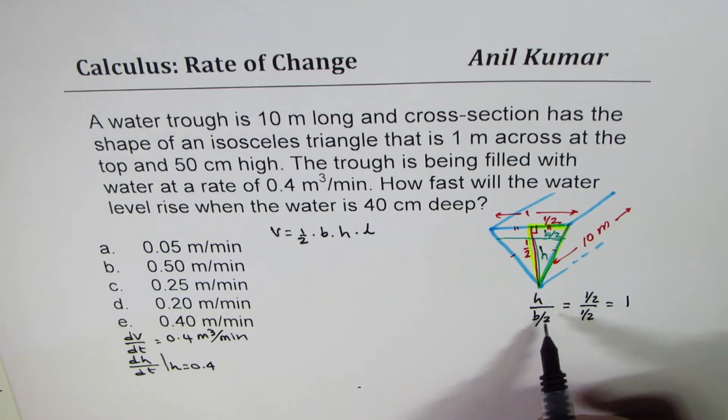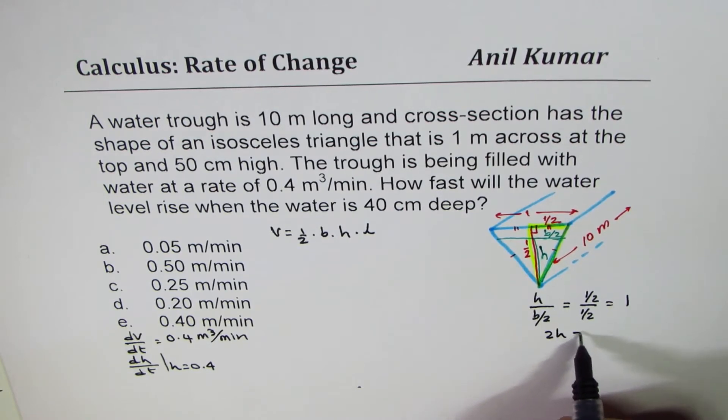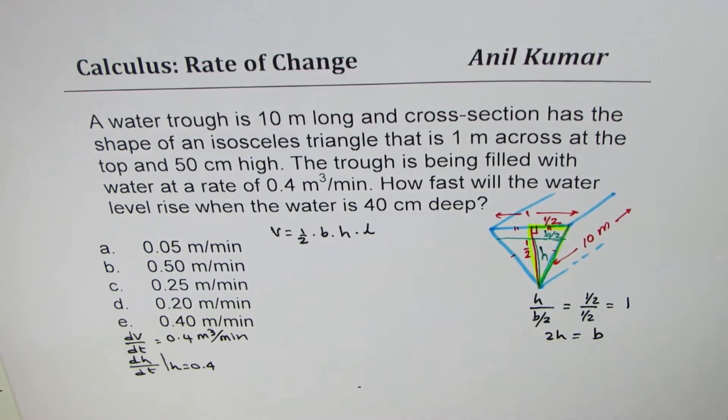And that gives us that if I just cross multiply, or I could take 2 here. So we can write 2 times height is equals to base. So that is the relation which we have.